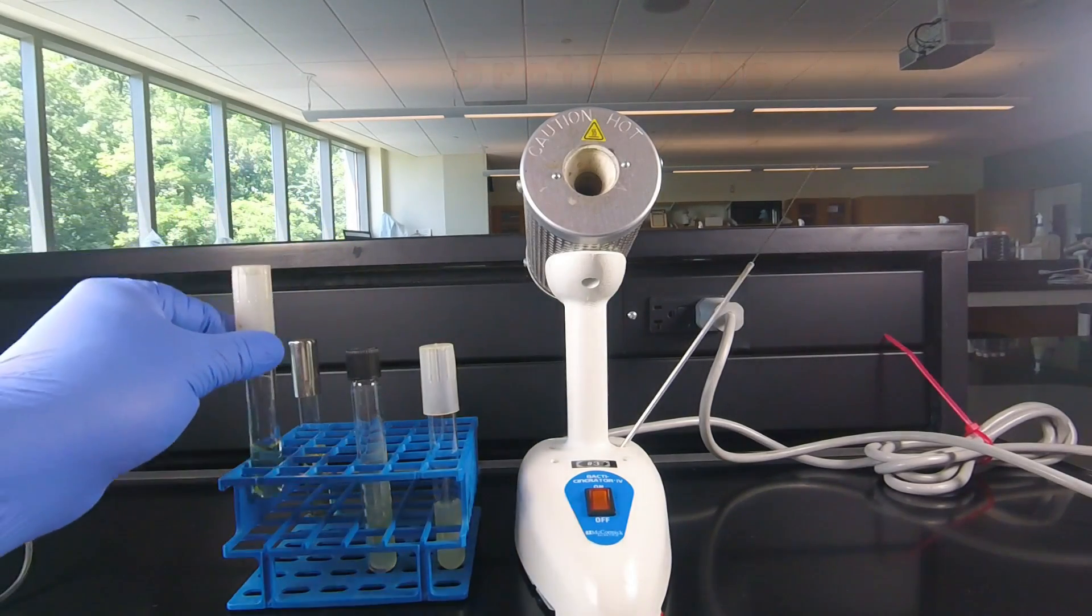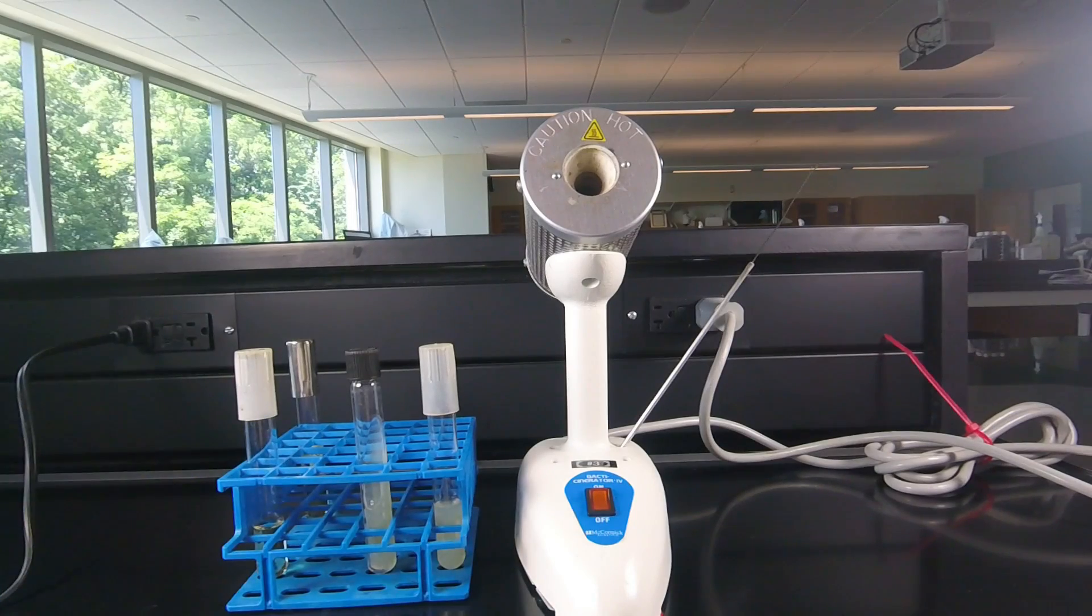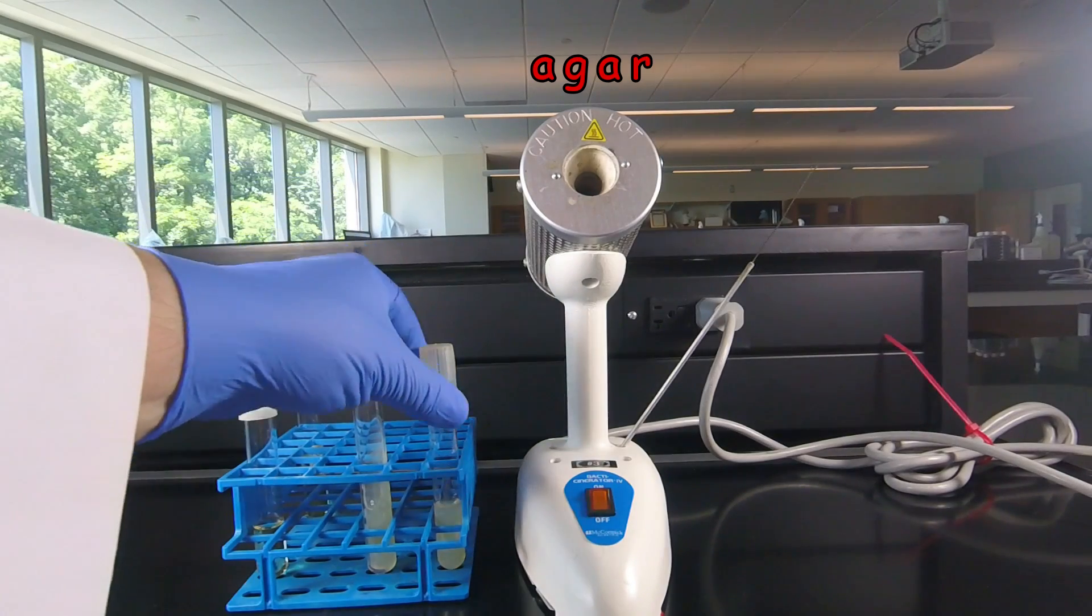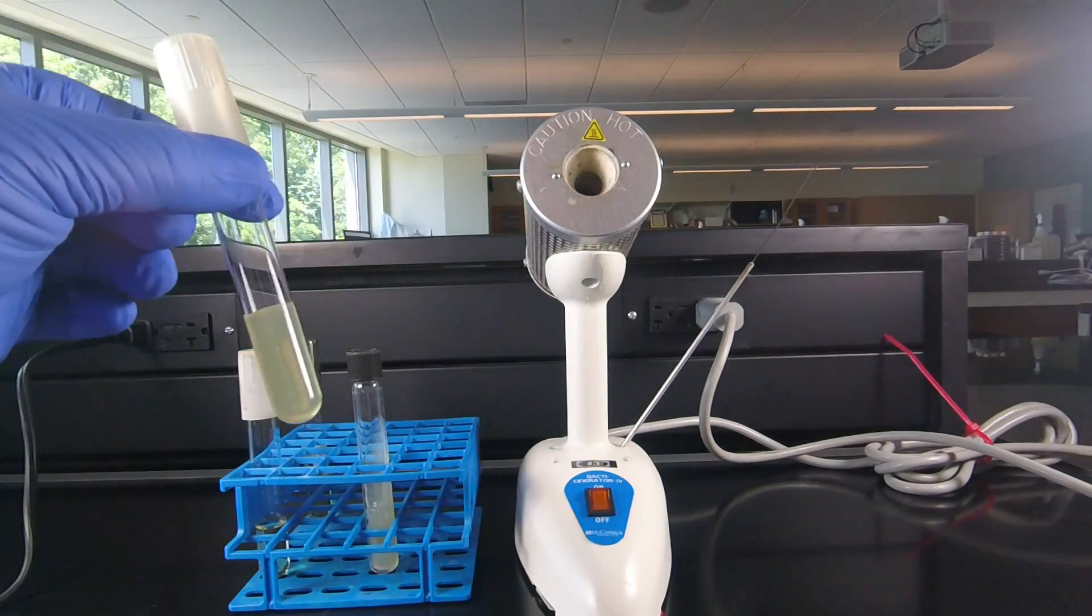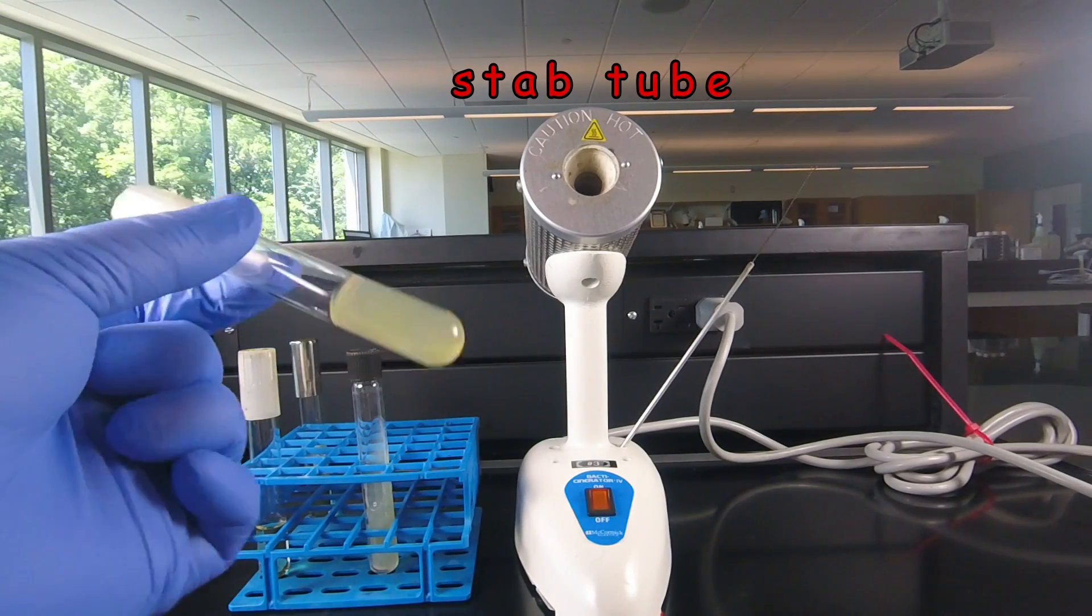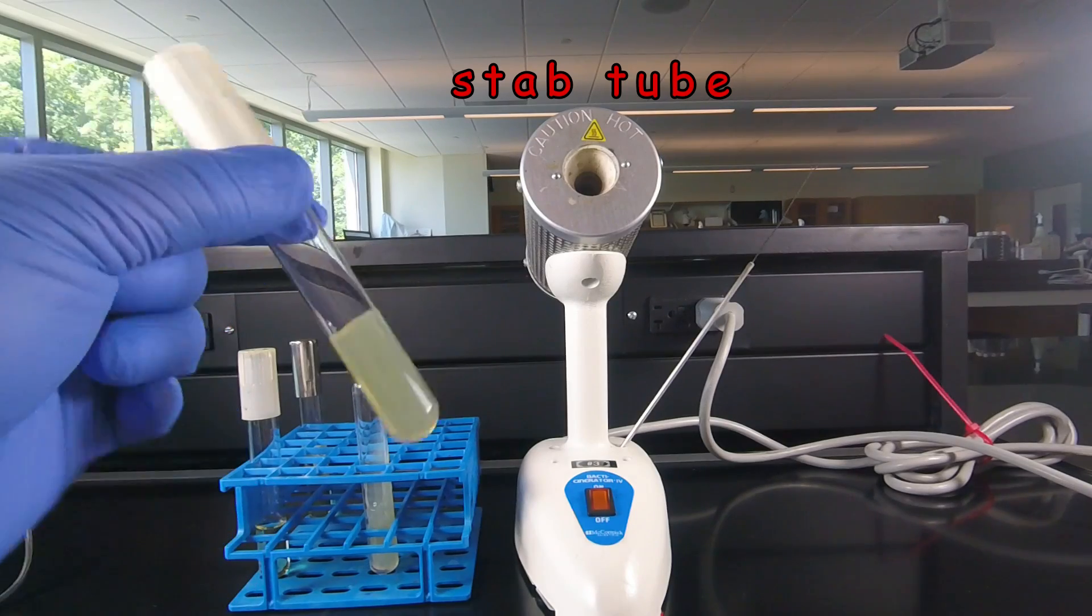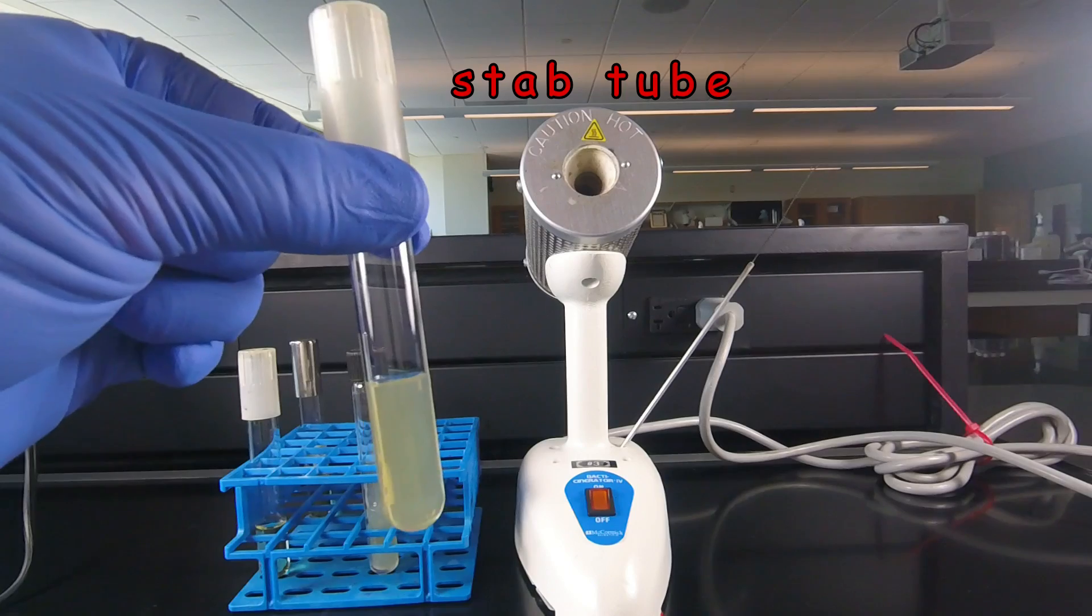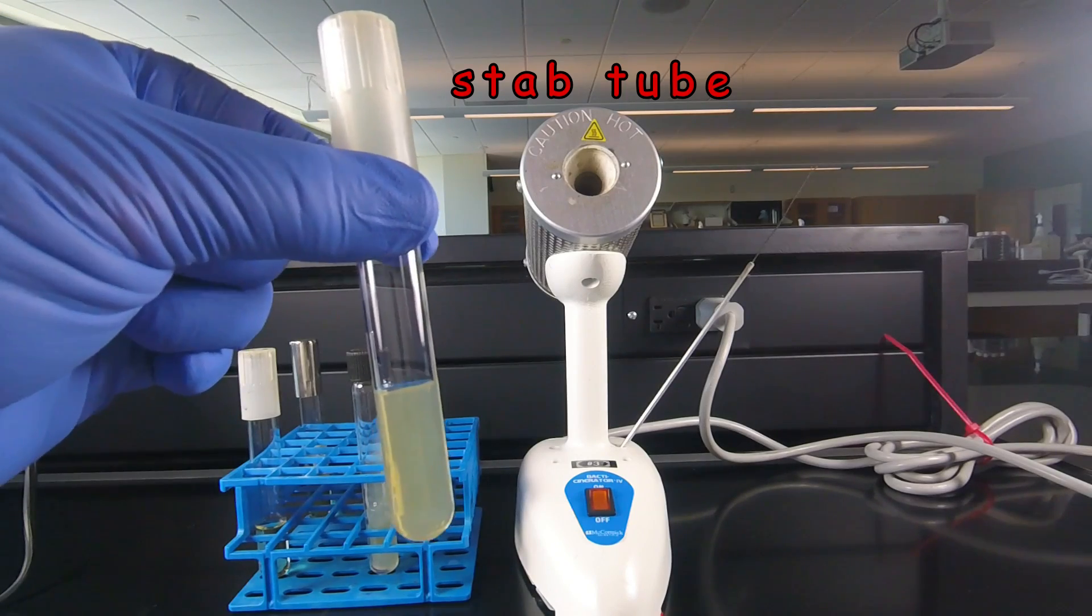We can also grow microorganisms on a solid medium by using a solidifying agent called agar. If we pour the agar in a tube and let it solidify upright, like we see here, we have a nice solid plug of agar that we inoculate by stabbing. So we sometimes call that a stab tube and call the cultures a stab culture.